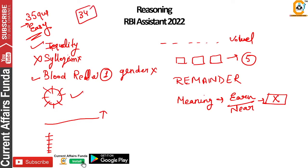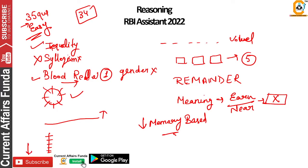One question was wrong — the blood relation question was not clear — so I attempted the remaining questions. You can tell in the comments how many questions you have attempted. I will share memory-based questions about what was asked. Subscribe so that you get a notification of this video.